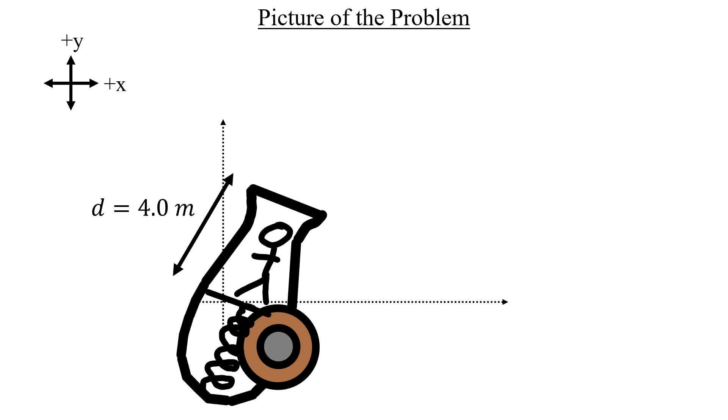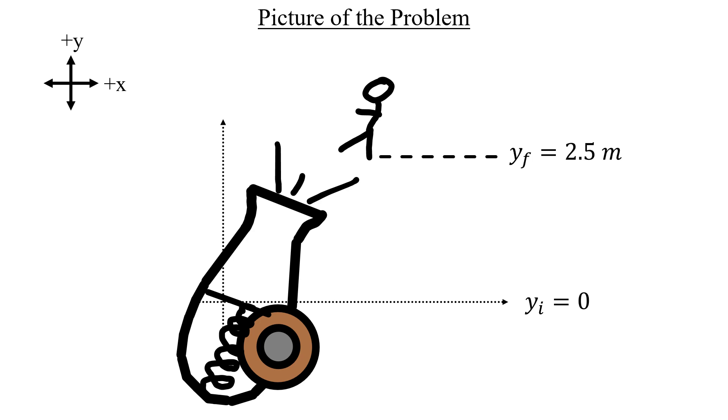We're given that he travels 2.5 meters from his initial starting position inside the cannon, so I'll keep things simple and call the initial height y equals zero and the final y equals 2.5 meters.